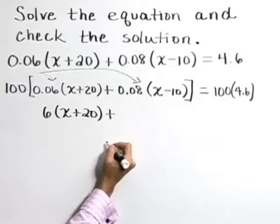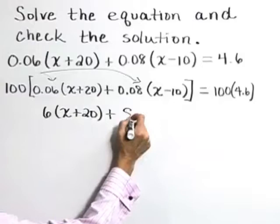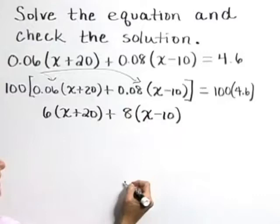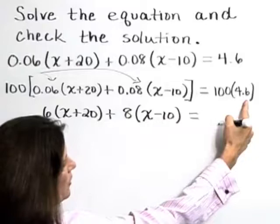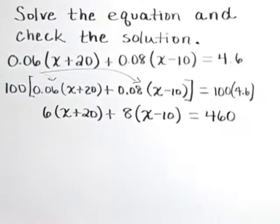With our second grouping, 100 times that 0.08 gives 8. Then we take that product times x minus 10. On the right hand side, 100 times 4.6 is going to move that decimal point over two places and give 460.